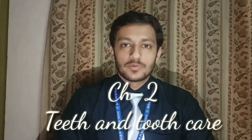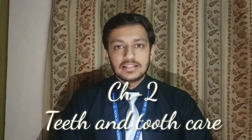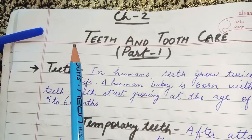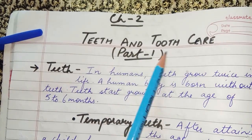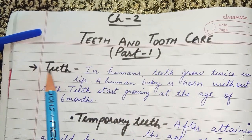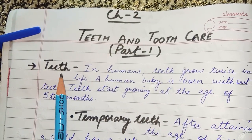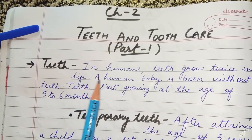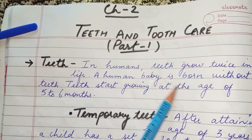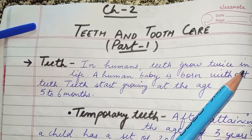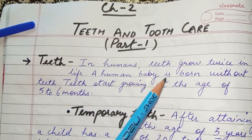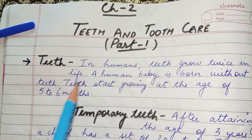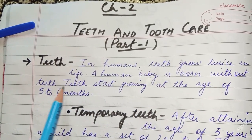We have completed our first chapter and are heading towards the next chapter, which is Teeth and Tooth Care. The first topic is teeth in humans — teeth grow twice in a lifetime. A human baby is born without teeth.